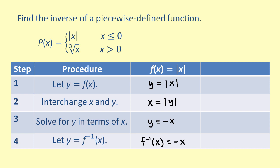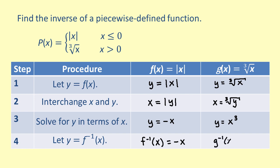Similarly, we can now let g of x equal the cube root of x and follow the same four-step procedure. So, we have y equals the cube root of x. Then, interchanging x and y, we get x equals the cube root of y. Solving for y in terms of x, we get y equals x cubed. Thus, the inverse function of g of x is g inverse of x equals x cubed.